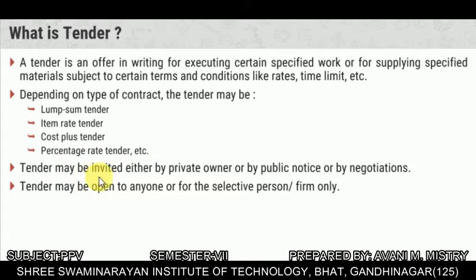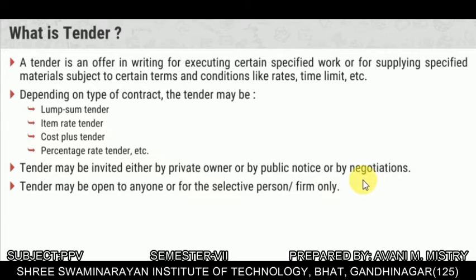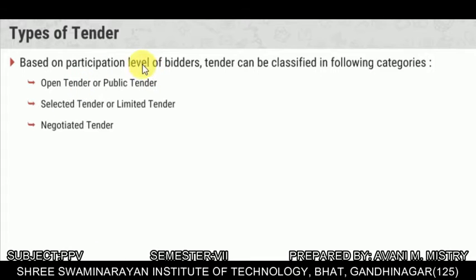Tenders may be invited either by a private owner, by public notice, or by negotiation. Based on the participation level of bidders, tenders can be classified into the following categories: open tender or public tender, selected tender or limited tender, and negotiated tender.